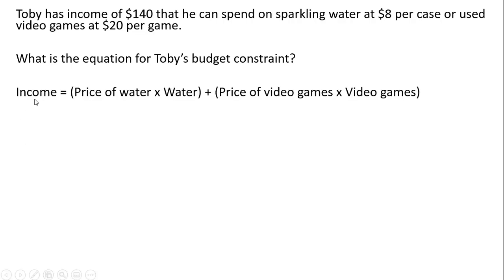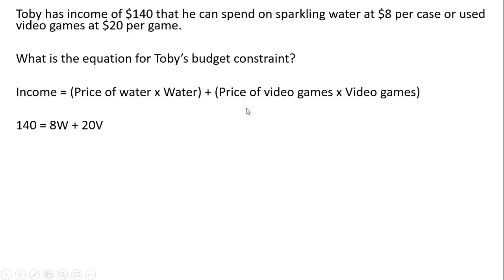In general, the budget constraint is just going to be: income equals the price of a good times the quantity of that good, plus the price of the other good times the quantity of the other good. In this case, our income is $140. The price of water is $8, so that's 8 times W, where W is the number of water cases, plus 20 times V. 20 is the price of video games, and V is the number of video games. So that is the equation for Toby's budget constraint.